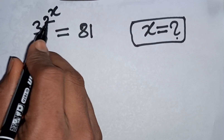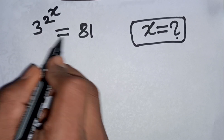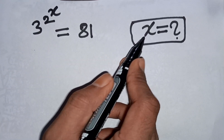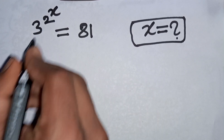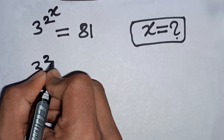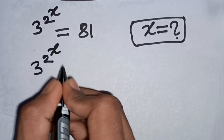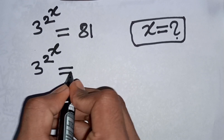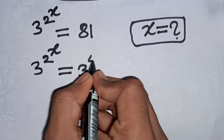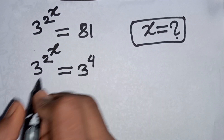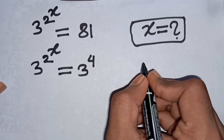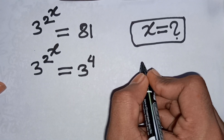3 power 2 power x is equal to 81. Find the value of x. So we have 3 power 2 power x is equal to 81, which is the same as 3 power 4.